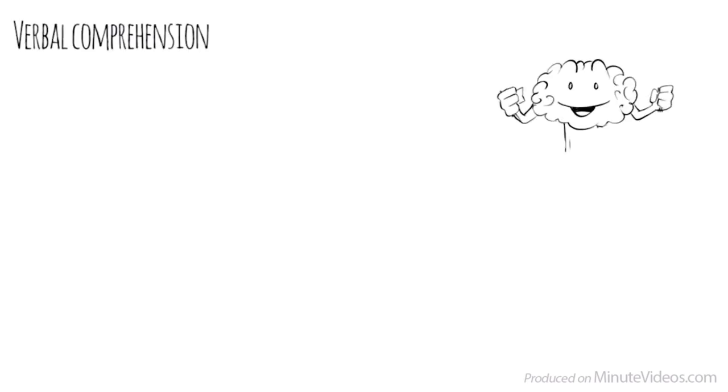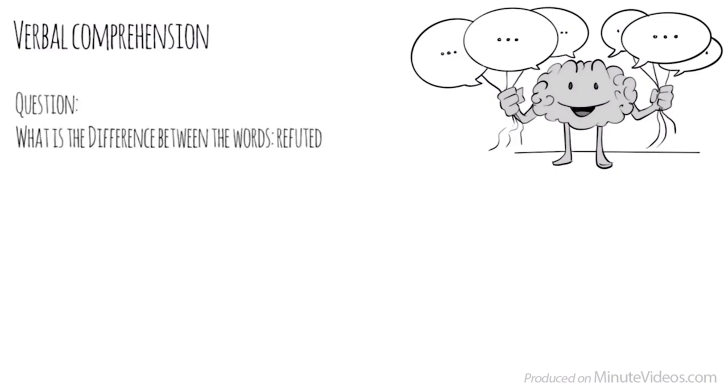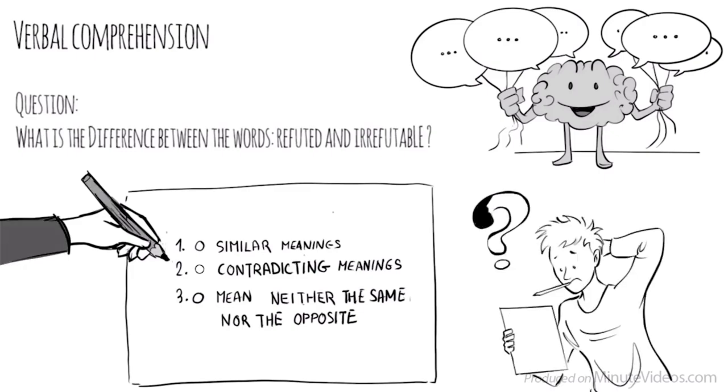The third section was verbal comprehension, which measures our ability to access vocabulary, express ourselves in a meaningful manner, and apply reasoning skills to information presented verbally. In the first question, it said, what is the difference between the words refuted and irrefutable? Do they have similar meanings, have contradicting meanings, or mean neither the same nor the opposite? They must have contradicting meanings.